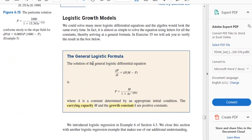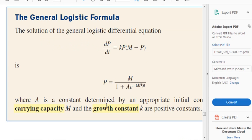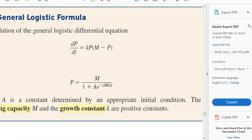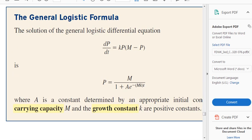Logistic growth model. Here's the general logistic formula. So the population will be equal to this formula right here, where K is the growth constant, M is the carrying capacity, and A is sort of the initial condition, or maybe it's initial population.